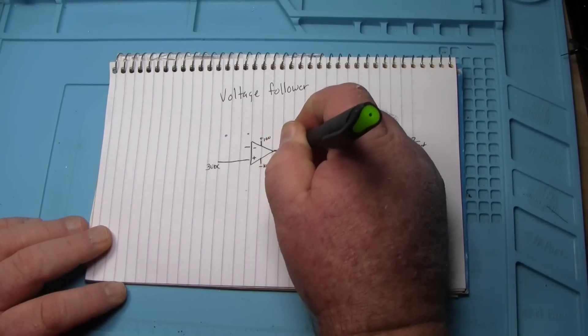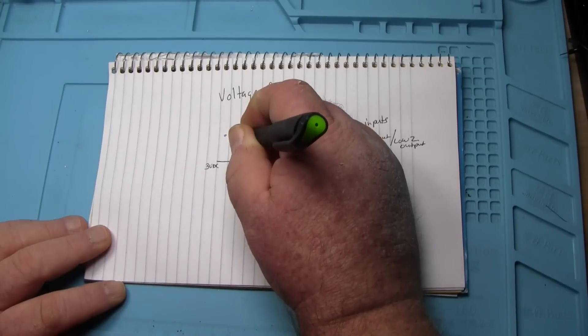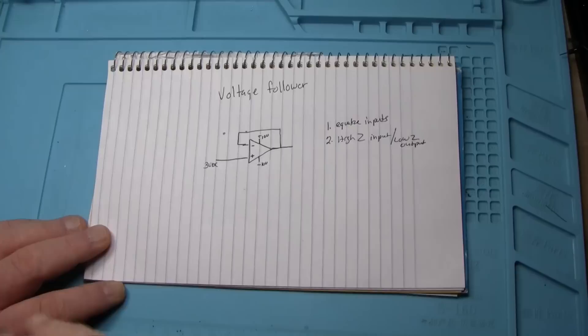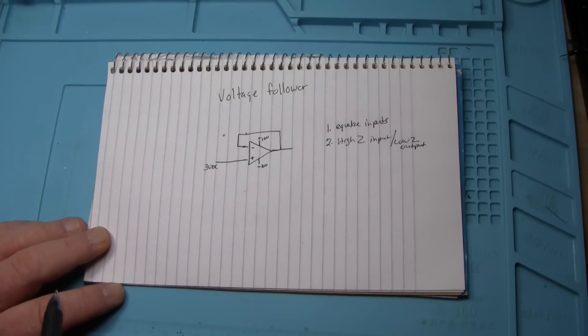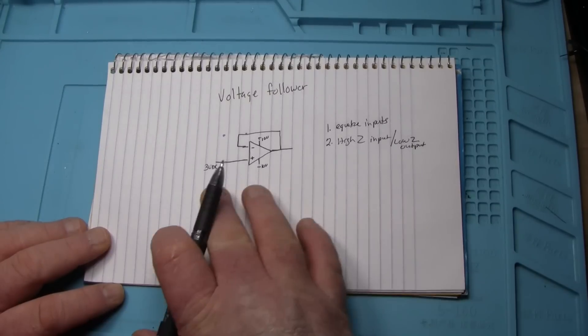So to connect and make our voltage follower all we do is we take the output and we run it back to the inverting input with no resistors, capacitors or anything.